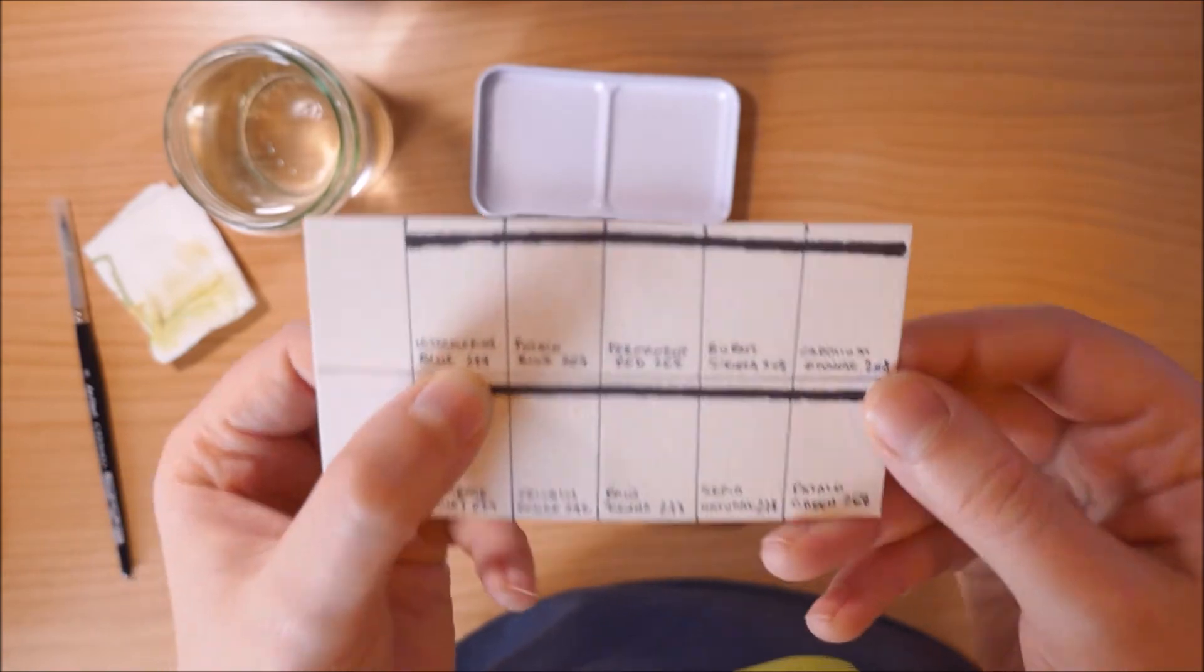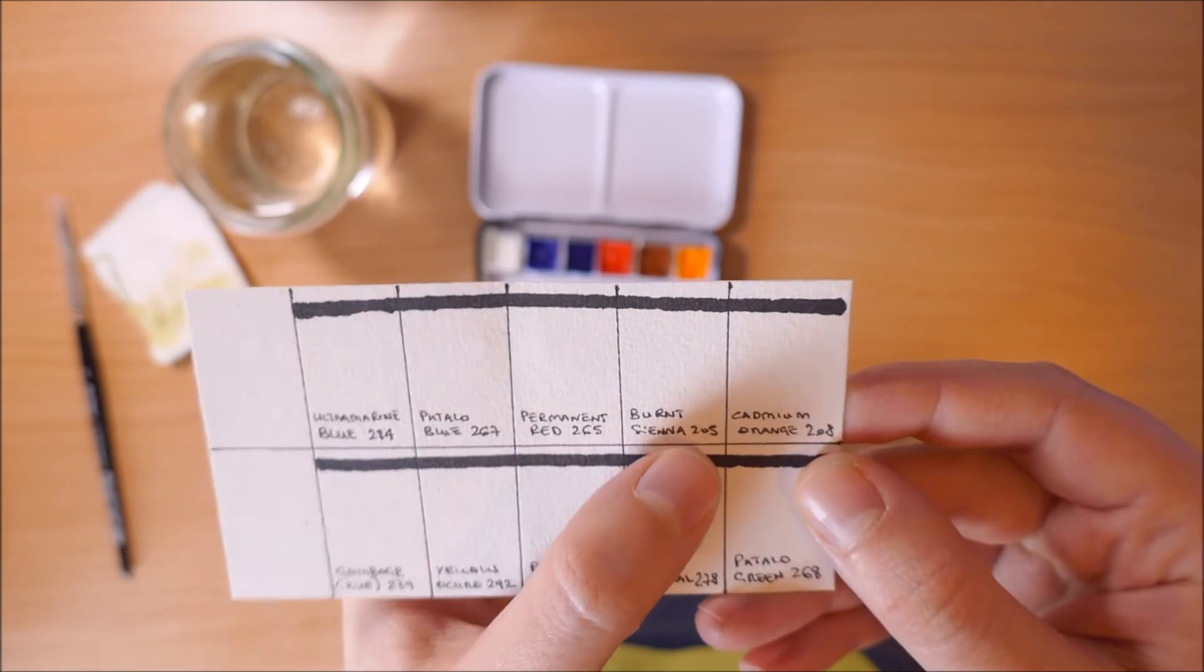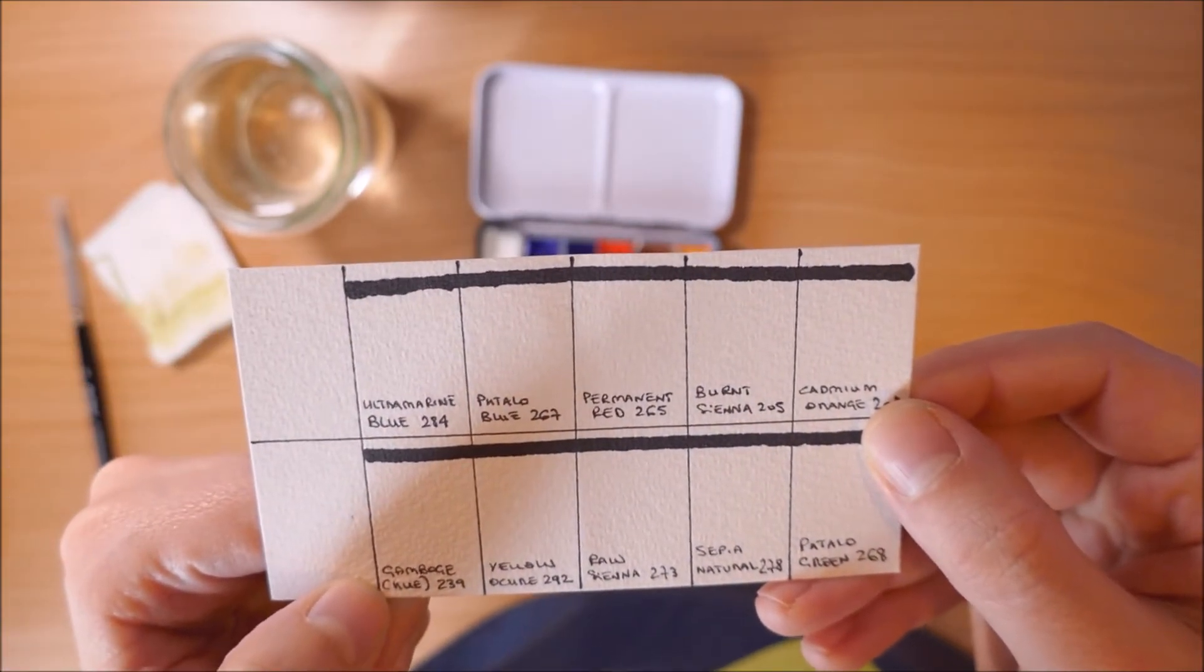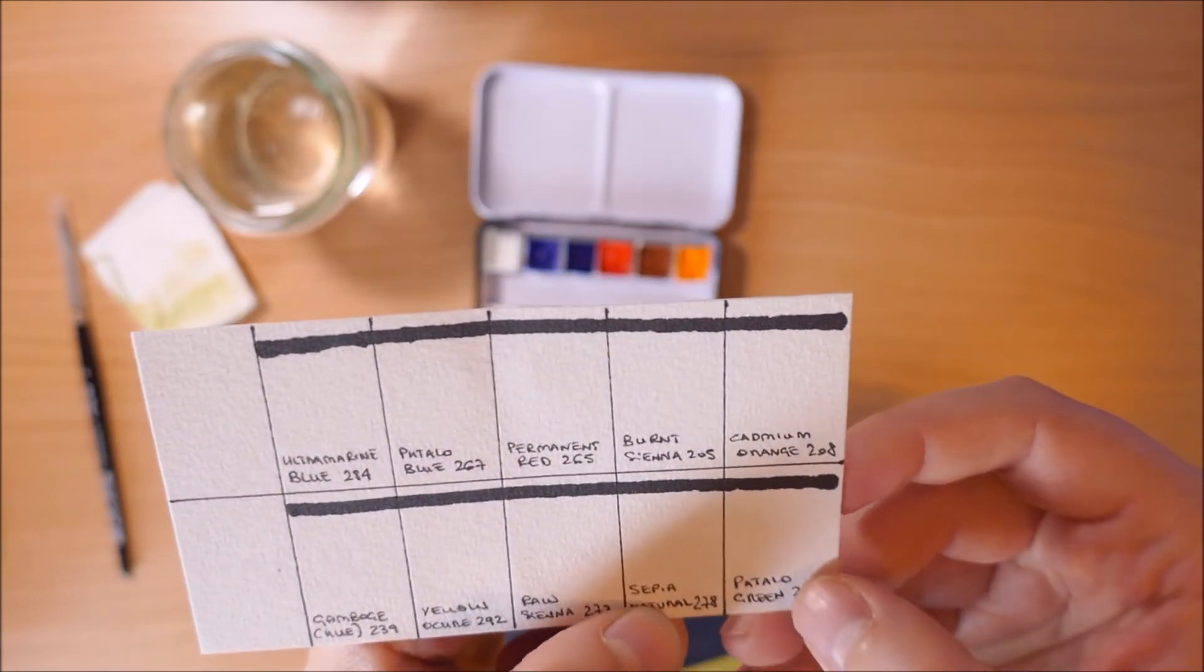The colors are ultramarine blue, phthalo blue, permanent red, burnt sienna, cadmium orange, gamboge hue, yellow ochre, rose sienna, sepia natural, and phthalo green.